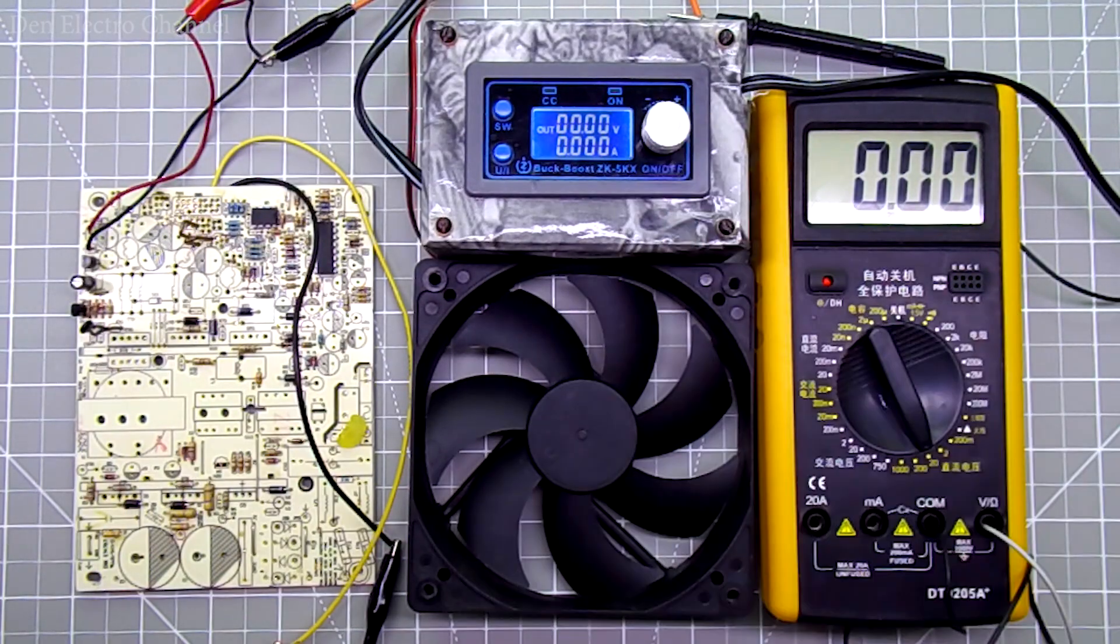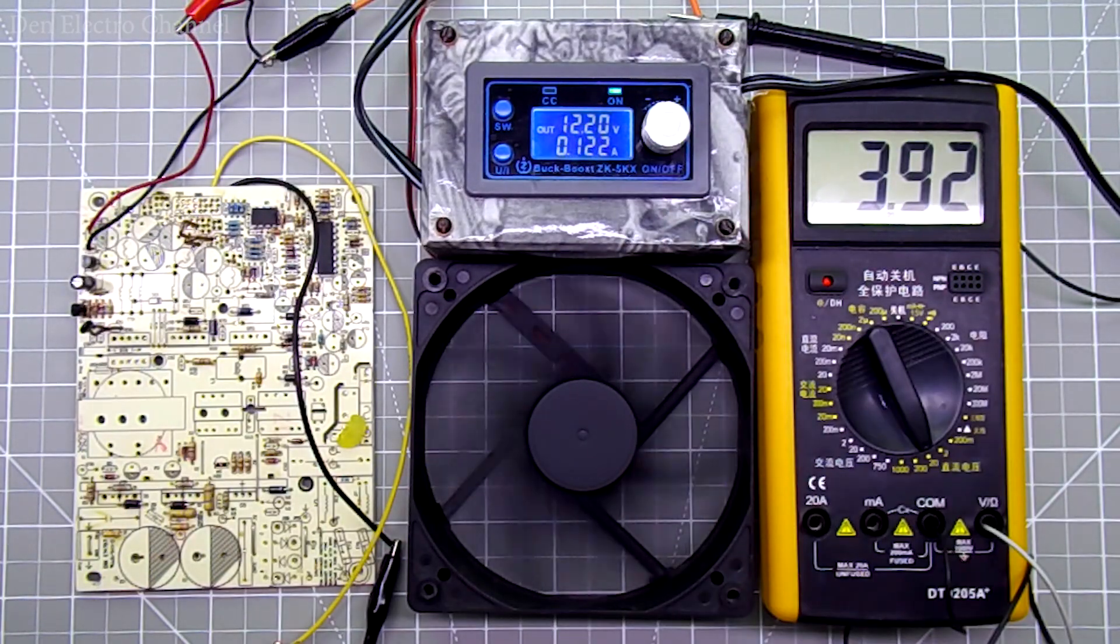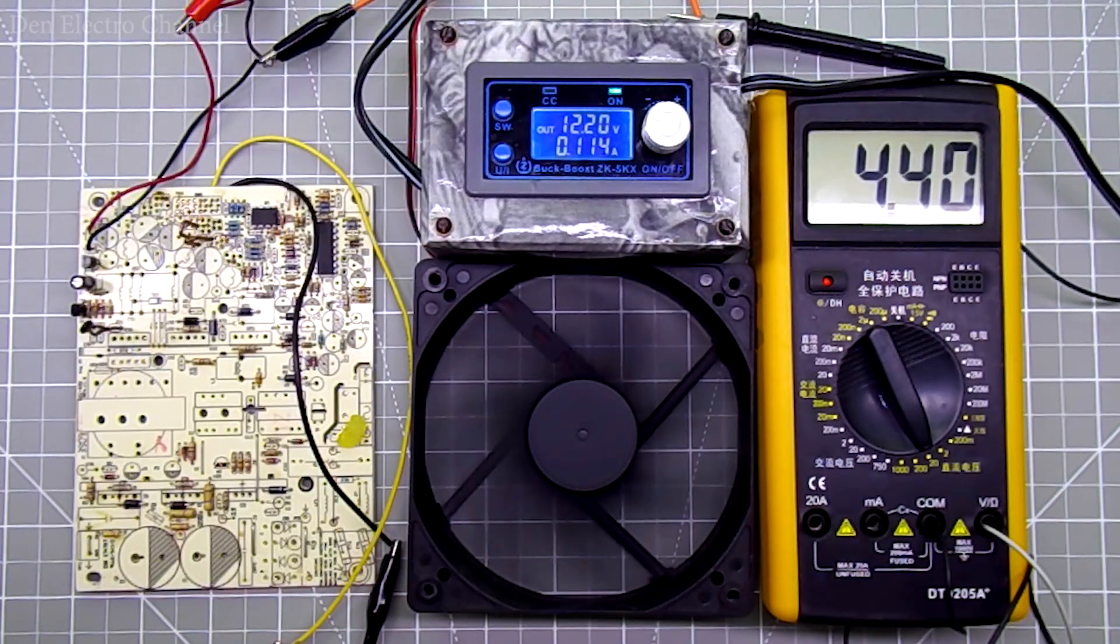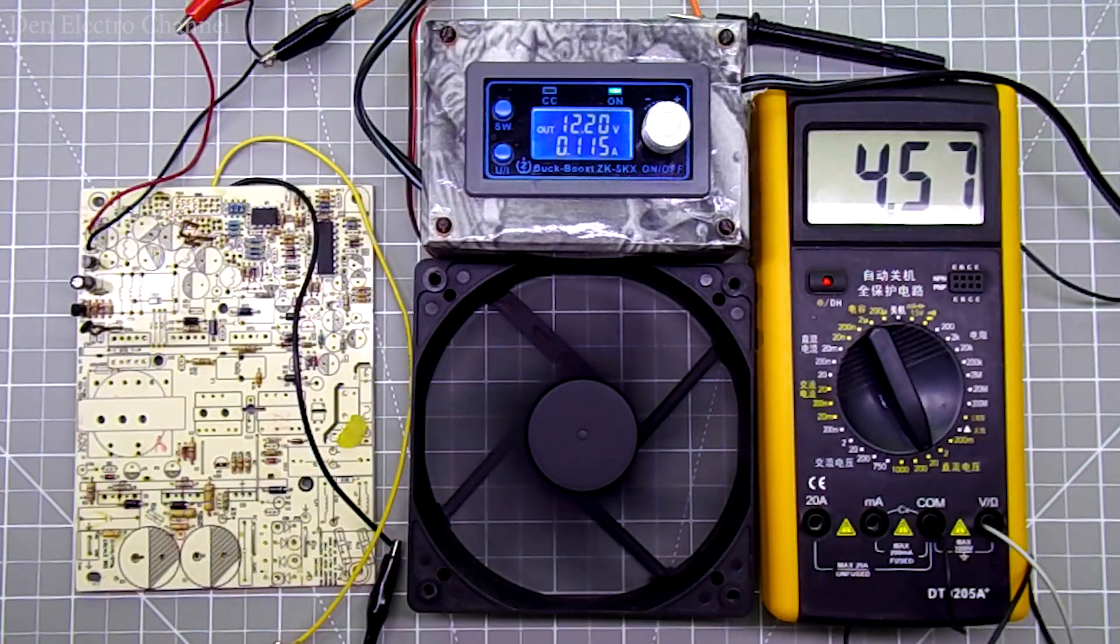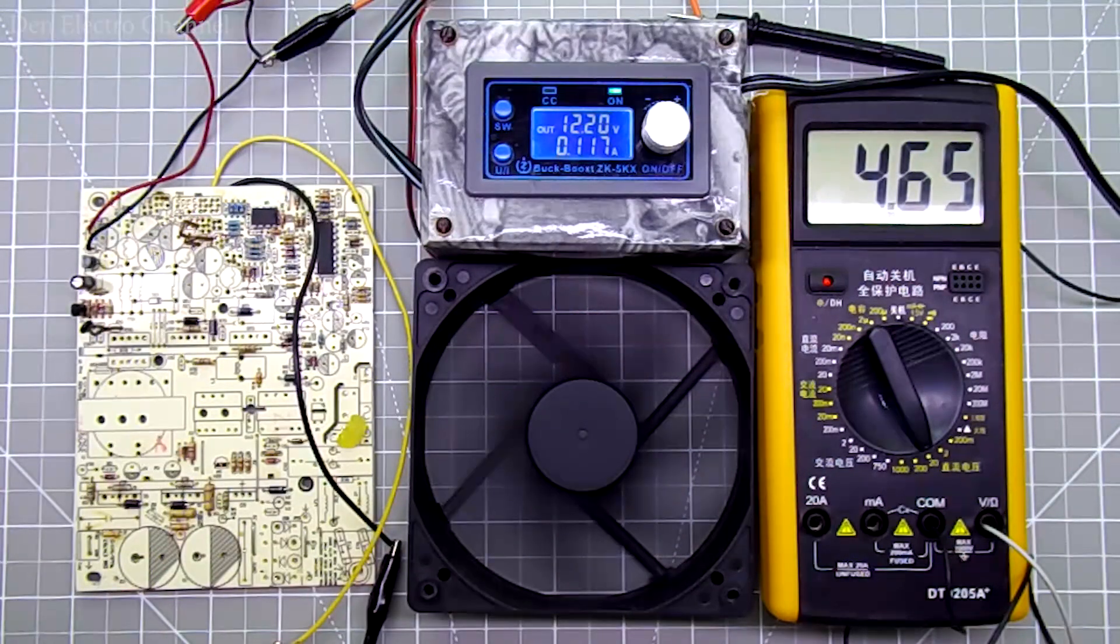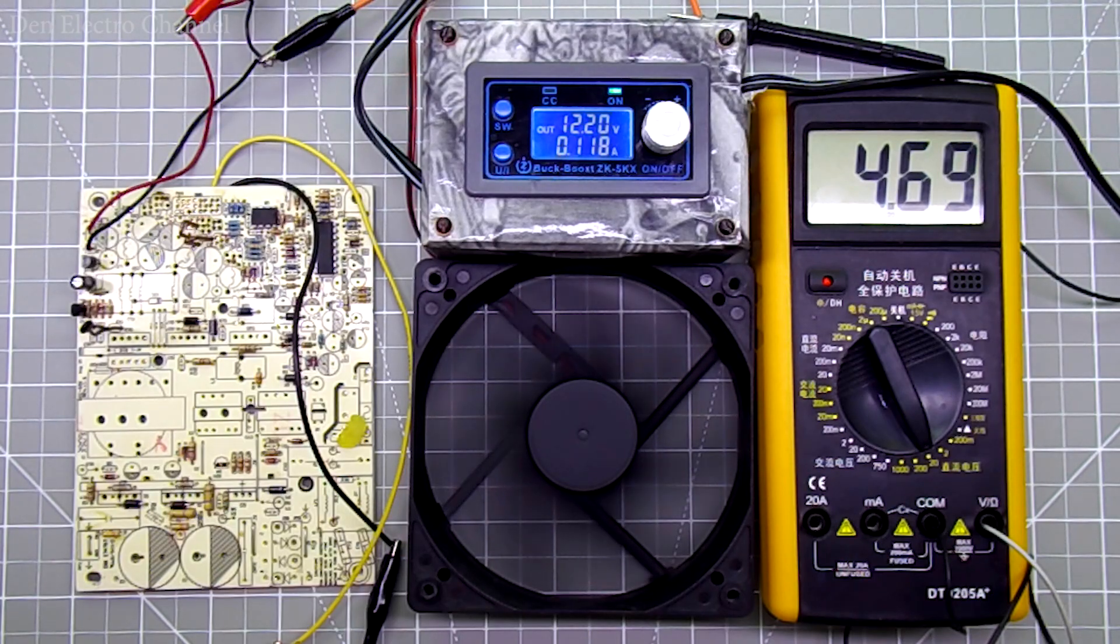I apply voltage. The fan starts spinning but the voltage on it does not rise immediately but slowly increases. From 4 volts it gradually increases to about 5. Then I will speed it up 5 times.